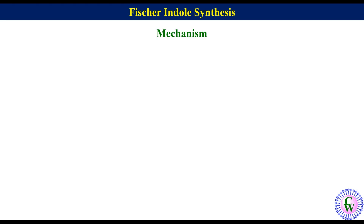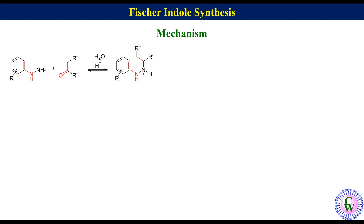Mechanism: Aryl hydrazine and aldehyde or ketone in the presence of acid undergo condensation to produce aryl hydrazone, which tautomerizes to another form that acts as a 1,5-diene system.